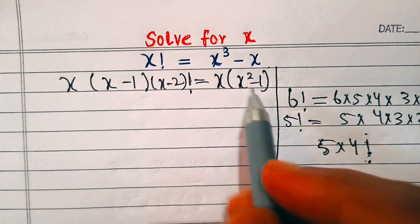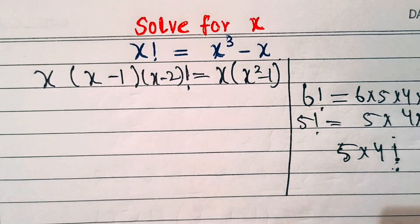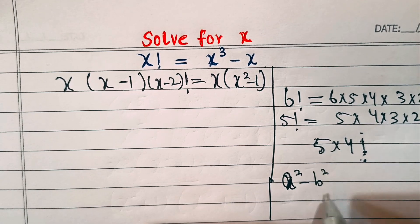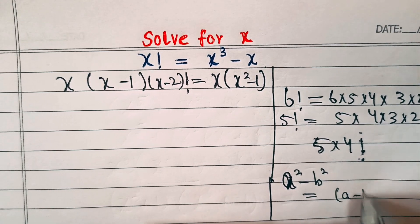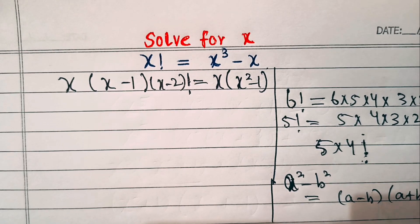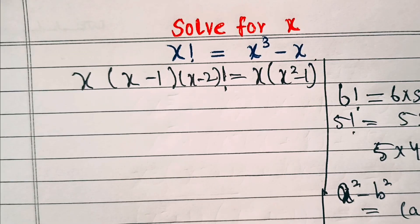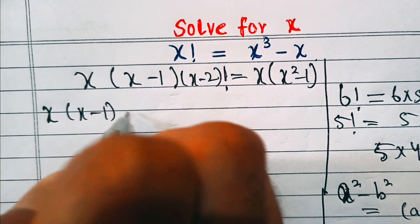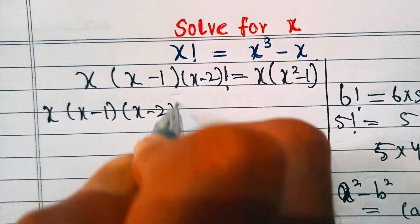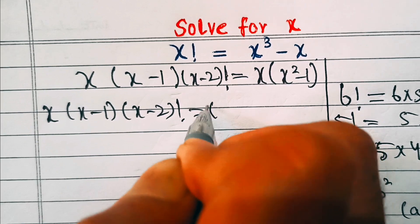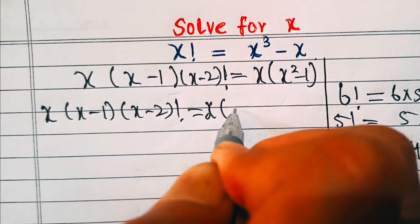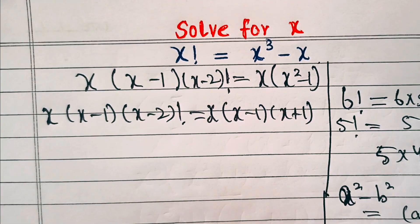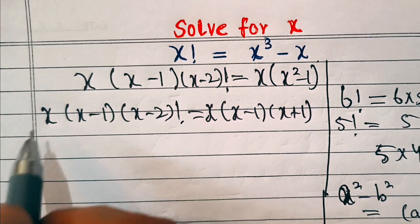Now x squared minus one is a difference of squares. We know a squared minus b squared equals (a minus b) into (a plus b). So we have x into (x minus one) into (x minus two) factorial equal to x into (x minus one) into (x plus one).